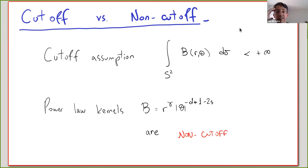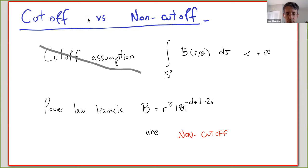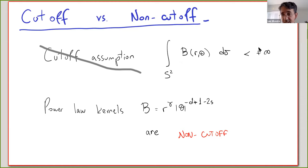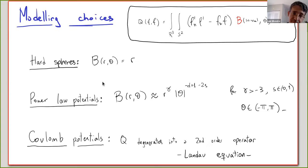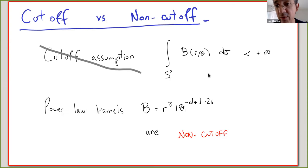There is a common terminology called the cutoff assumption: it consists of assuming that kernel B is integrable with respect to the spherical variable. The hard spheres model satisfies the cutoff assumption, but the power law potential model does not. In the 20th century there was a focus on the cutoff case, though there are different types of kernels for the Boltzmann equation to study.